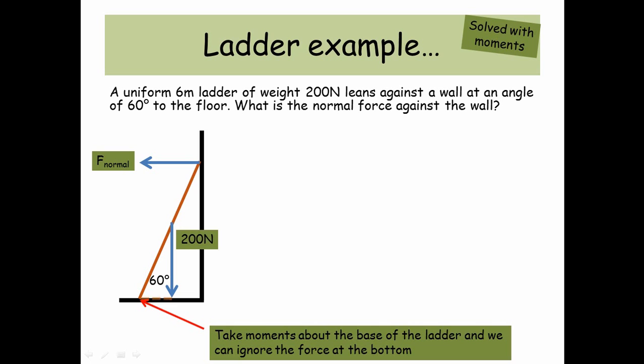So firstly, let's think about the perpendicular distance from the line of action of our 200 newtons to the pivot point that we've chosen. And then we also need to think about what's the perpendicular distance from the line of action from the normal force to that pivot point as well. And we know these two moments, because our object is in equilibrium, these forces, the moments produced by these forces, must be in equilibrium too.